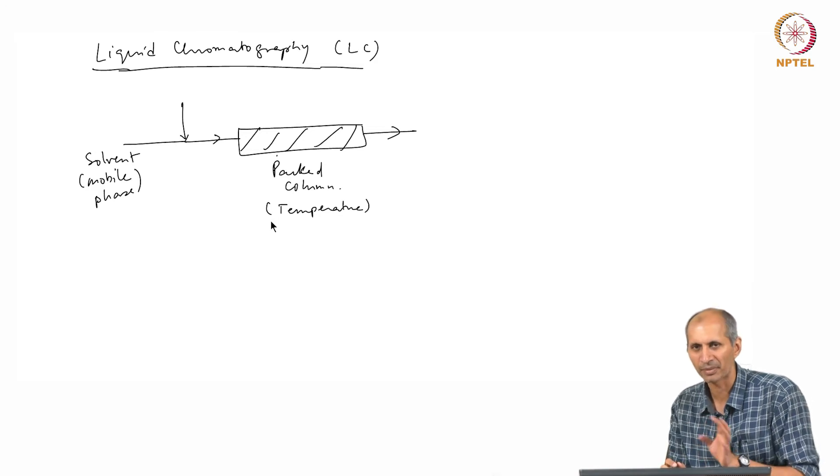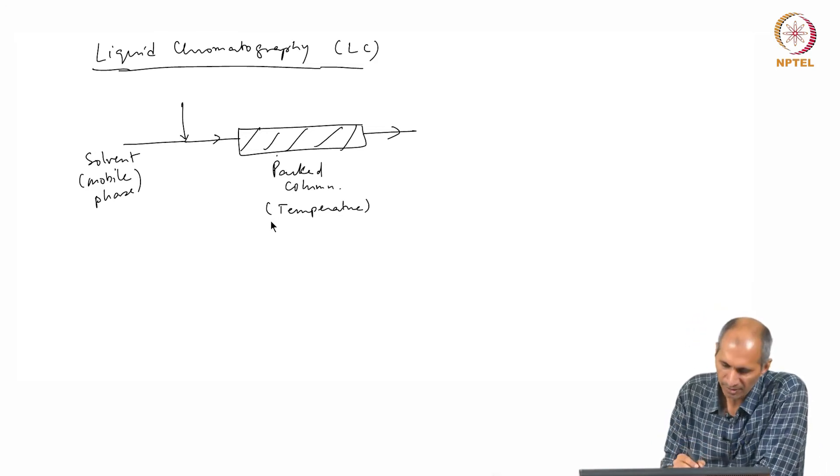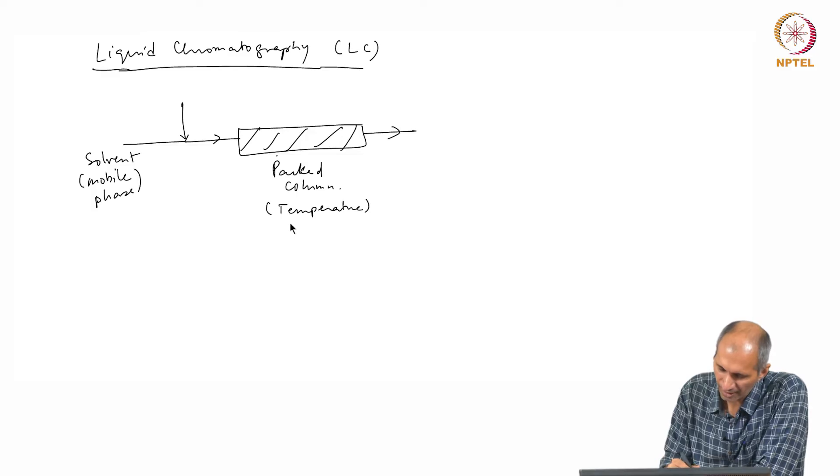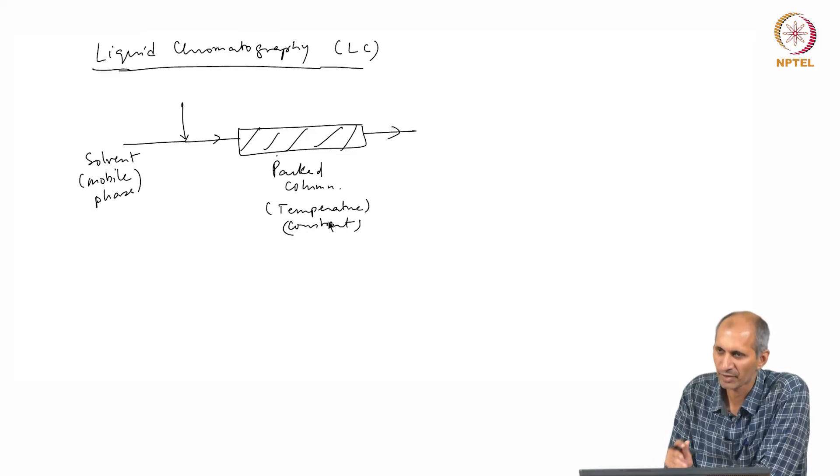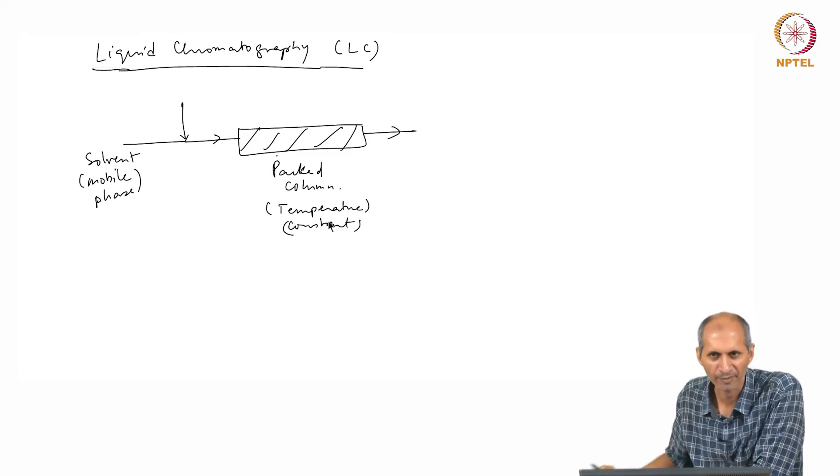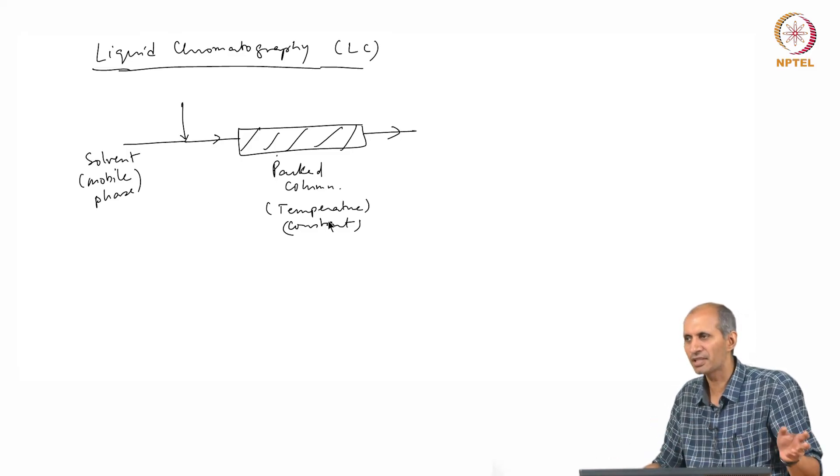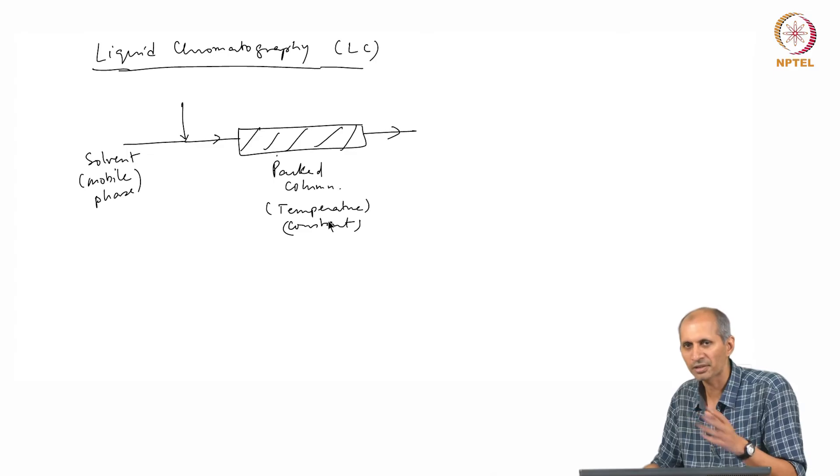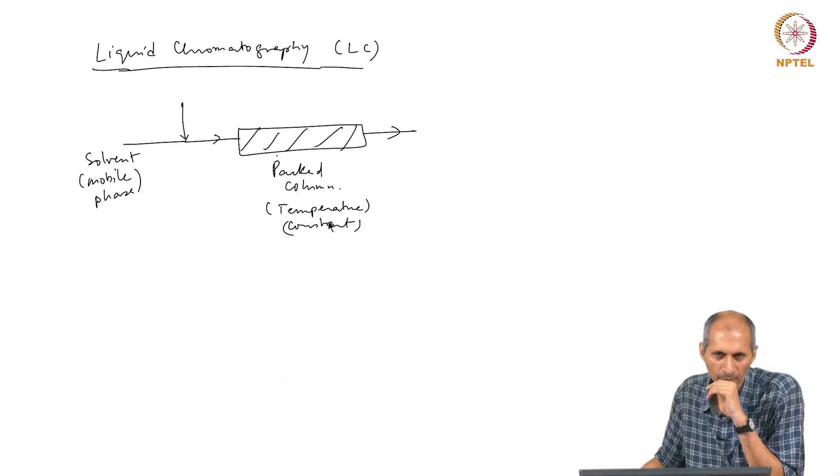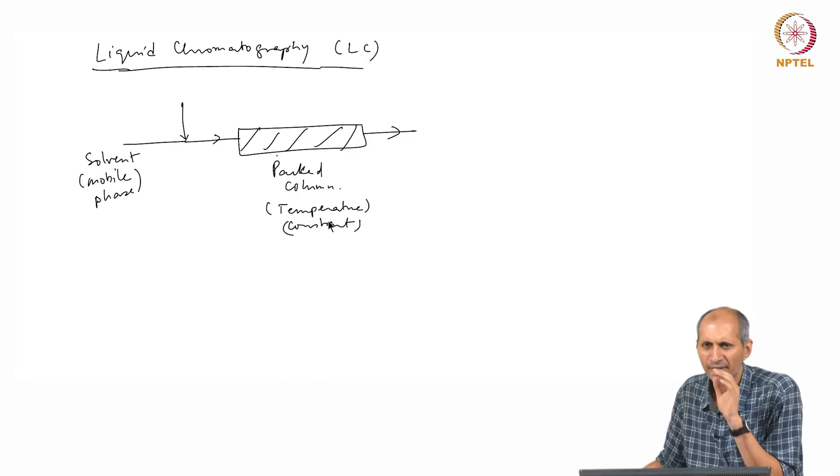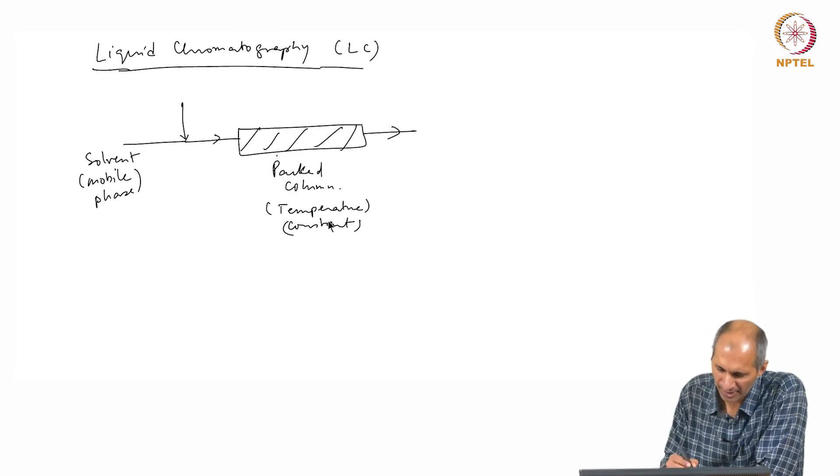You are basing everything on retention time and retention time changes because of flow non-uniformities which will occur because of bubbles. We do not want all that. Temperature people do not usually play around with liquid chromatography. Temperature is there usually to maintain constant temperature, that is all. The oven is there as a controller.